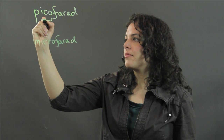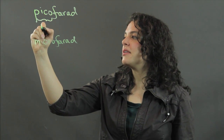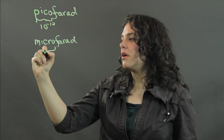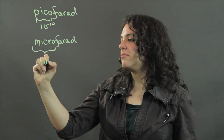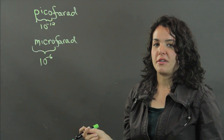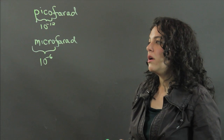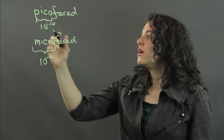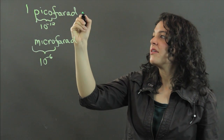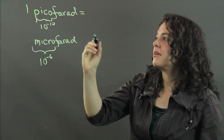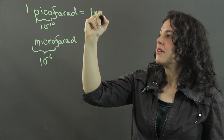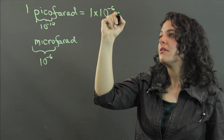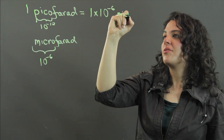Picofarad — pico means 10 to the minus 12. And micro means 10 to the minus 6. So if I have a picofarad, 1 picofarad is going to be 1 times 10 to the minus 6 microfarads.